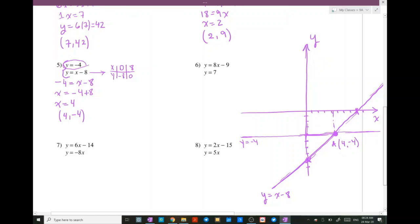So this is how we find the solution of the system graphically by drawing the two lines and finding their point of intersection, and this is how we find it.